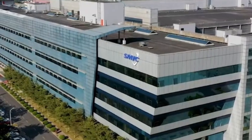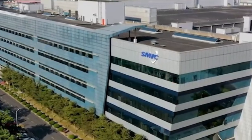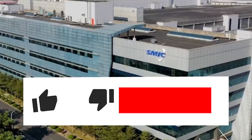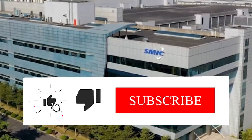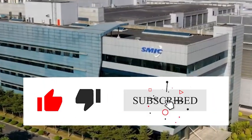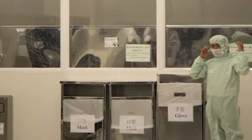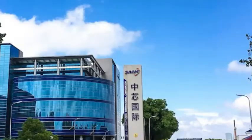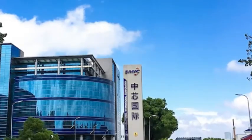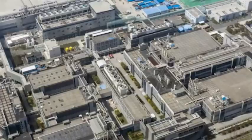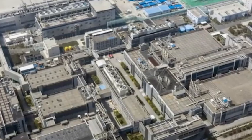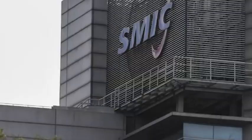TSMC is expected to produce A19 processors for Apple using 2nm process in the second half of this year. While its competitor Samsung is facing the problem of low yield rate and Intel is not making good progress, everyone thought that TSMC would be the world leader in advanced technology.